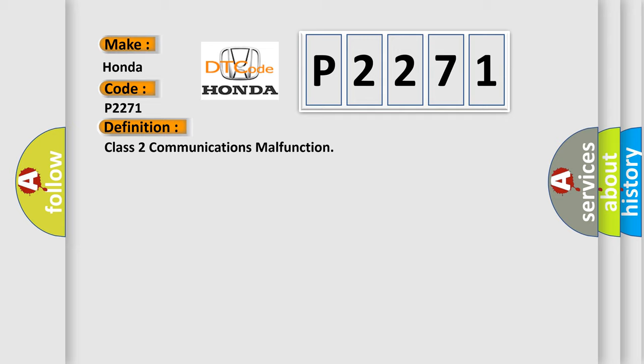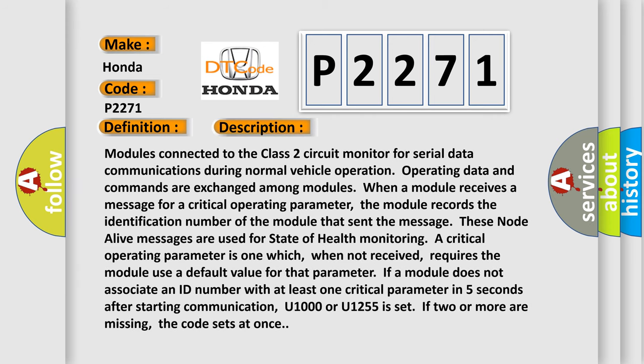And now this is a short description of this DTC code. Modules connected to the Class 2 circuit monitor for serial data communications during normal vehicle operation. Operating data and commands are exchanged among modules. When a module receives a message for a critical operating parameter, the module records the identification number of the module that sent the message.